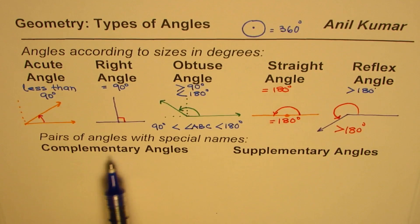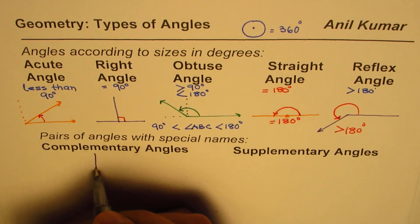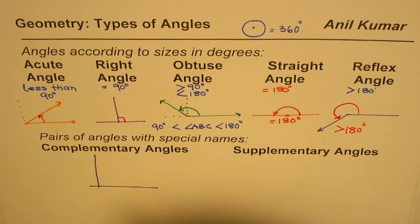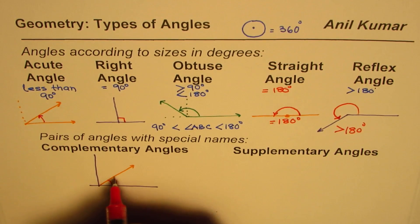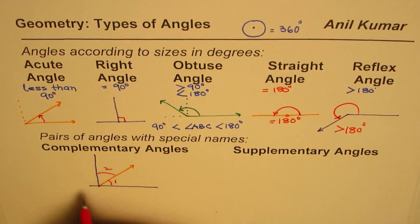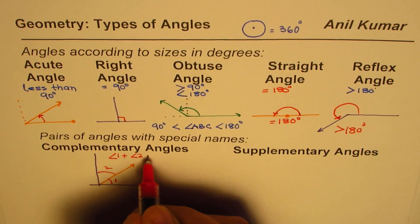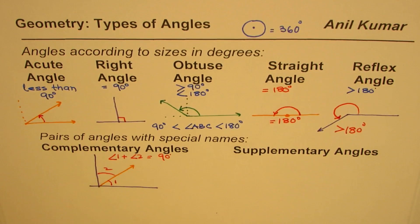We'll also talk about pairs of angles which have special meanings — complementary angles and supplementary angles. If we have angles whose combination is 90 degrees, those are called complementary angles. So if angle one plus angle two equals 90 degrees, we say they are complementary angles.